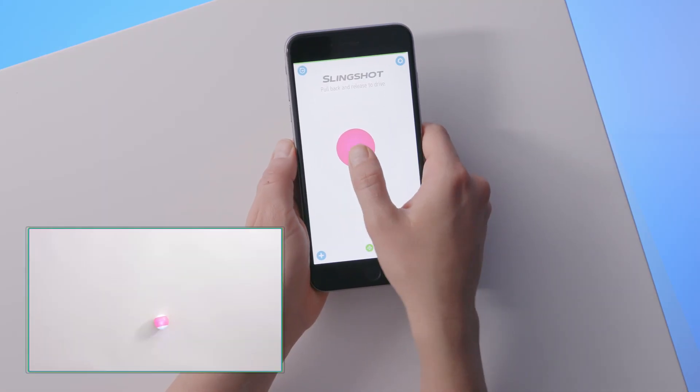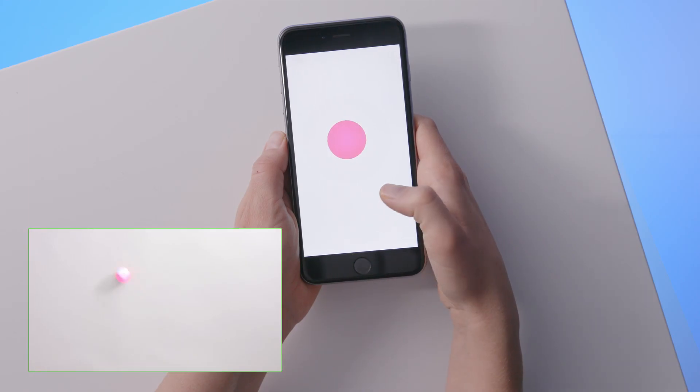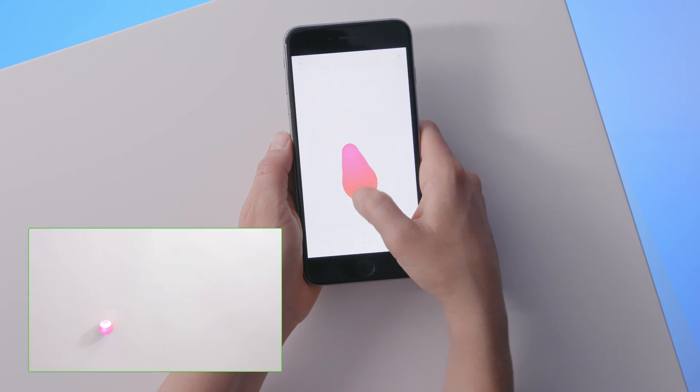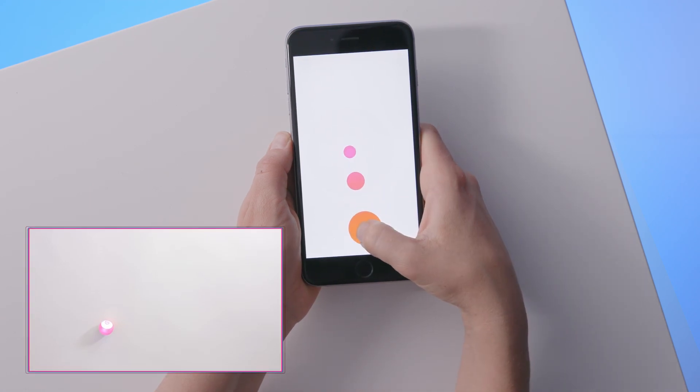Slingshot mode is great for quick tabletop games. Pull back on the center blob to aim and set power. Remember, the blue light will indicate the back of the mini, then release to send your mini shooting forward.